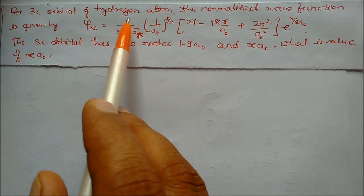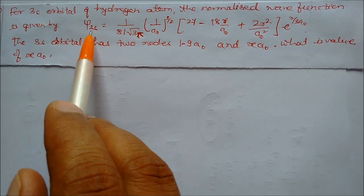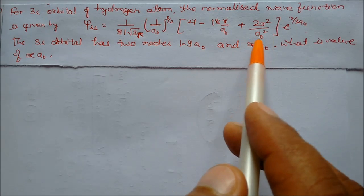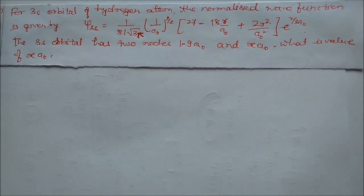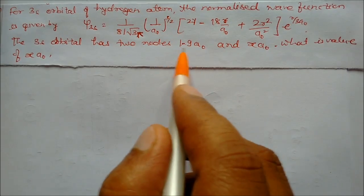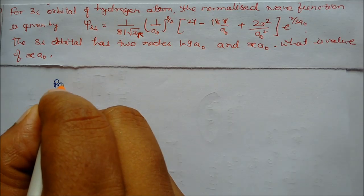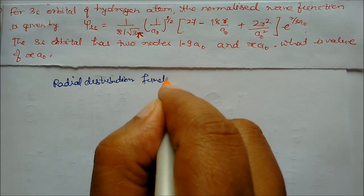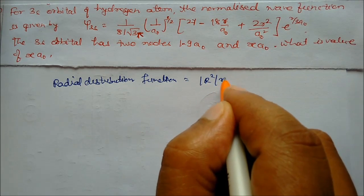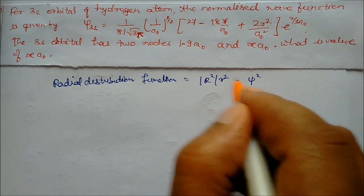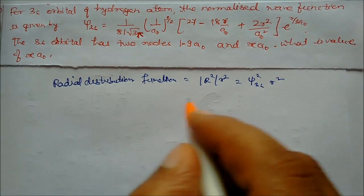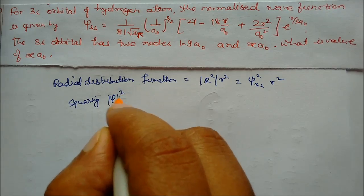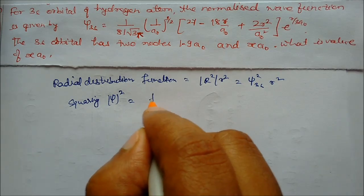Next, for the 3s orbital of hydrogen atom, the normalized wave function is ψ₃s = (1/81√(3π)) · (1/a₀)^(3/2) · (27 - 18r/a₀ + 2r²/a₀²) · e^(-r/3a₀). The 3s orbital has two radial nodes. The radial distribution function is r² · |ψ₃s|², and at nodes this function equals zero, so ψ = 0.